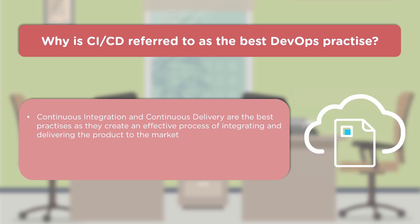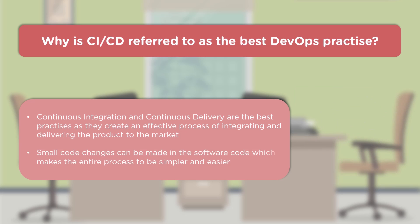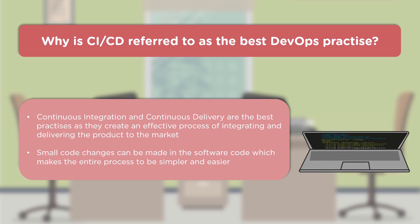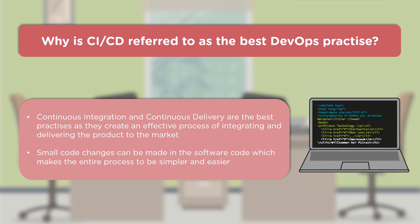CI/CD helps development teams implement effective processes. Small code changes can easily be made and deployed to a production environment in a simple, straightforward mechanism. Changes can flow directly from the developer's machine all the way to the production environment — that's the biggest benefit of implementing these two processes in a DevOps platform.